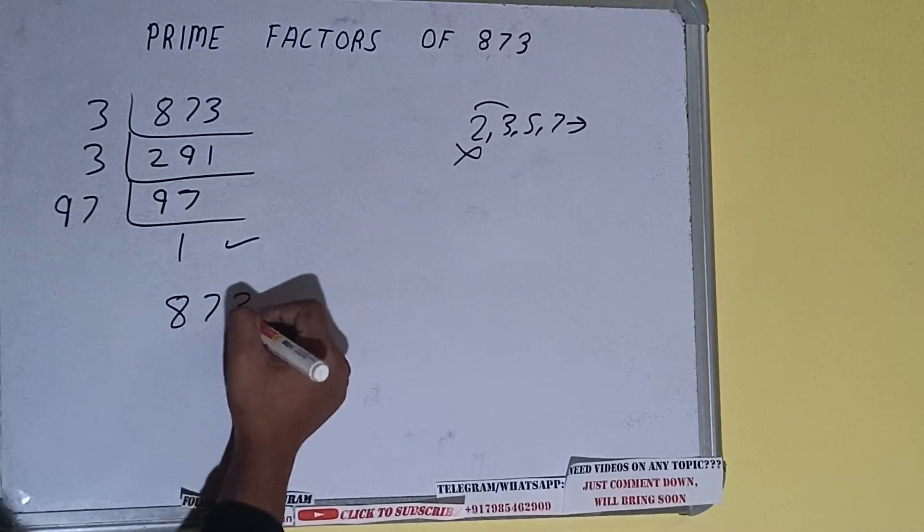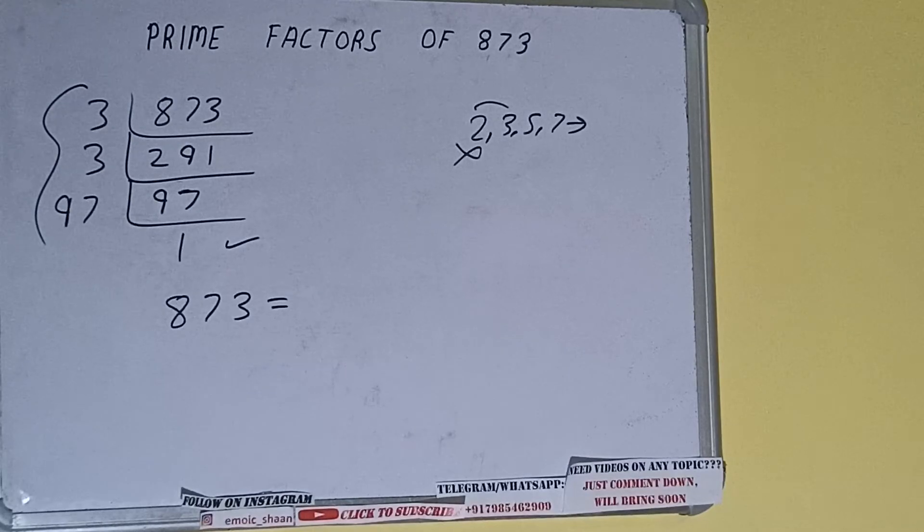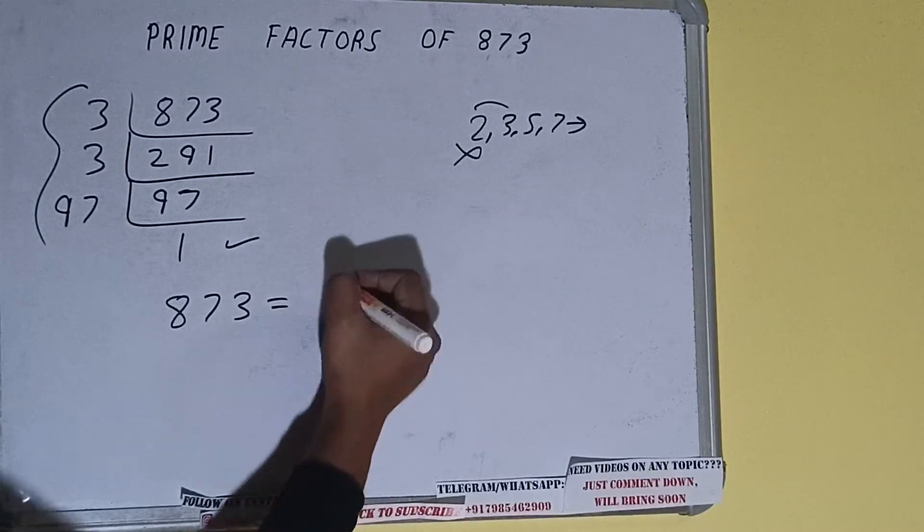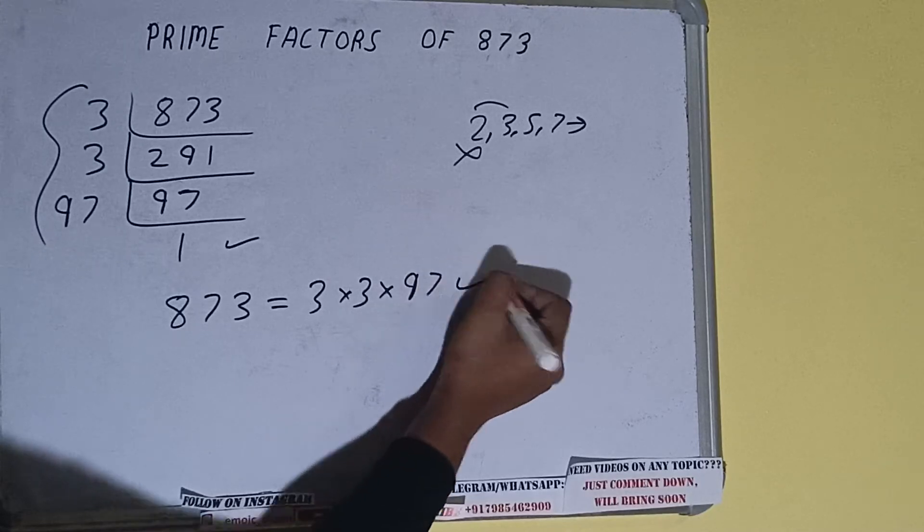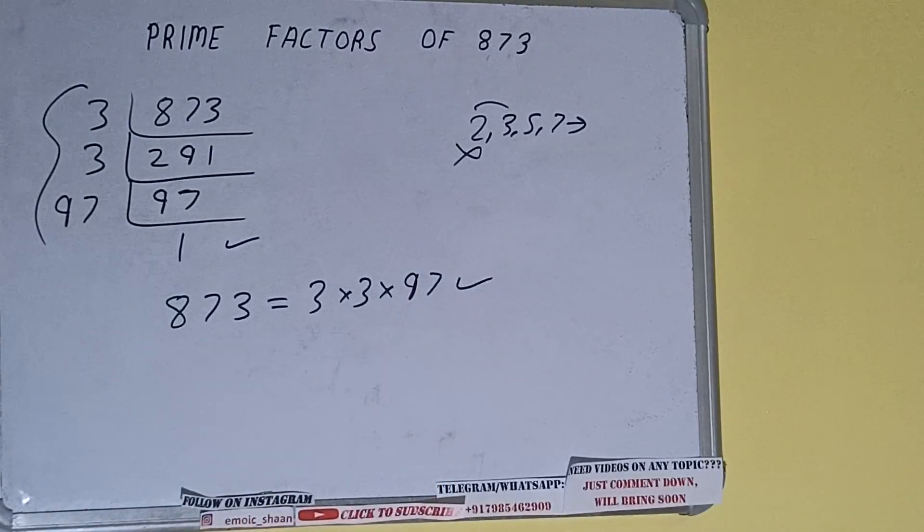That is, prime factors of eight seven three equals multiply whatever we have on the left-hand side, that is three times three times ninety-seven. That will be the answer. So this is all about prime factors of the number 873.